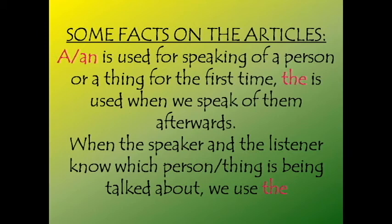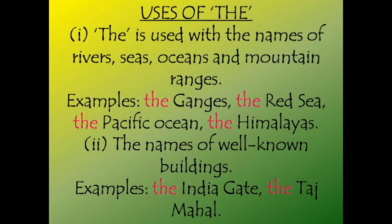Let us now know some facts on these articles. A or an is used for speaking of a person or a thing for the very first time, whereas the is used when we speak of them afterwards. When the speaker and the listener both know which person or thing is being spoken about, we use the. The is mainly used with the names of rivers, seas, oceans and mountain ranges — for example, the Ganges, the Red Sea, the Pacific Ocean, the Himalayas.